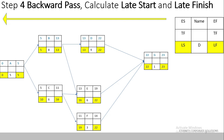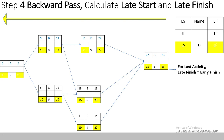Step 4 is the backward pass, where we calculate the late start and late finish of each activity, going from right to left. The assumption for the last activity in any network is that Late Finish equals Early Finish. The early finish of Activity G is 23, so the late finish is also set to 23. Then, Late Start = Late Finish − Duration. For Activity G: 23 − 1 = 22.